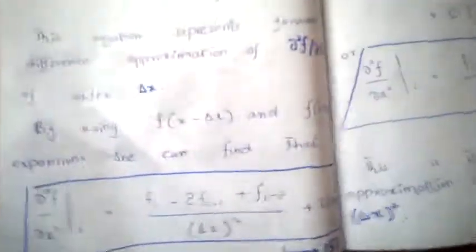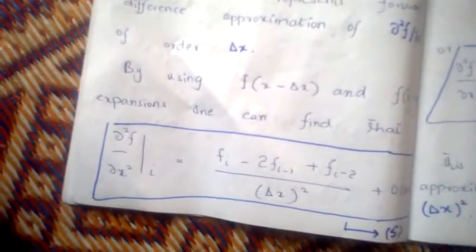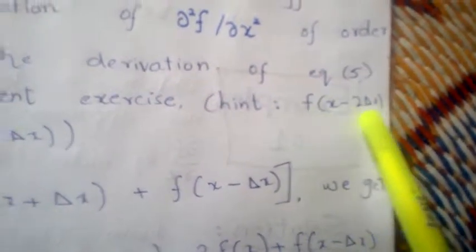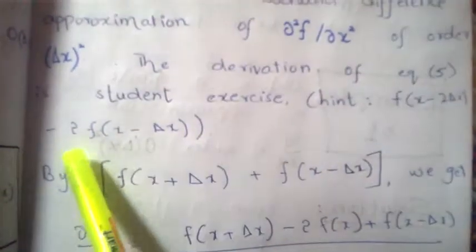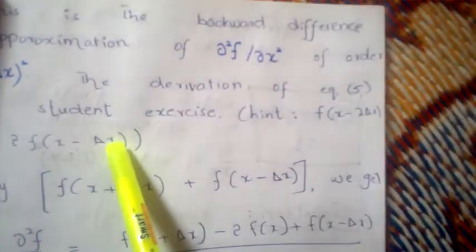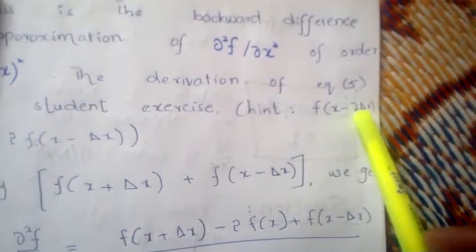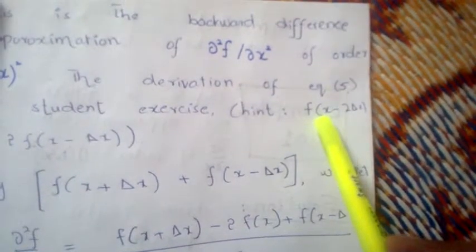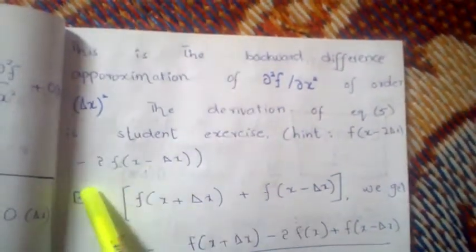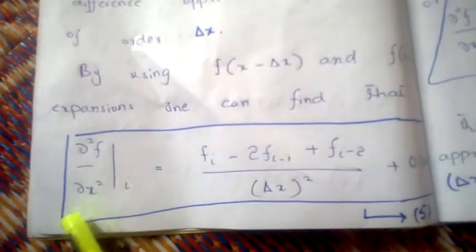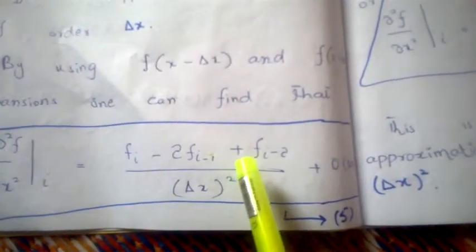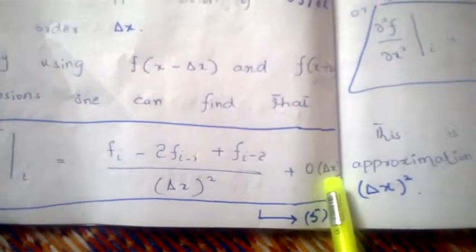Next, we find the backward difference approximation — this is your homework. You can find it by performing the operation f(x − 2Δx) − 2·f(x − Δx). Note that previously we used f(x + 2Δx); now we use f(x − 2Δx). Applying this operation yields: ∂²f/∂x² = (f_{i} − 2f_{i−1} + f_{i−2}) / Δx², and its order is O(Δx).